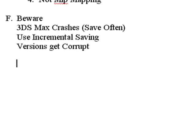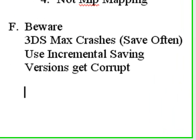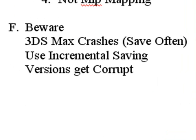I have this labeled as Part F — and it's an F if you don't do this. Beware: 3DS Max crashes, so you need to save often and use incremental saving. Because when it crashes, sometimes it corrupts the file version. If your version has been corrupted and you've been saving over and over with the same filename, you're going to lose everything. It's very easy in 3DS Max to incrementally save, so use that feature. If you don't do it, you get an F.